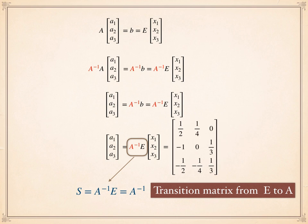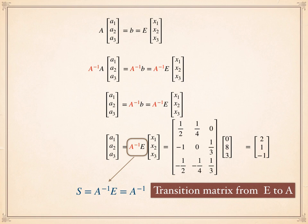To find vector a, I multiply the inverse matrix of A by the vector x, which is the coordinate vector of b with respect to the standard basis. The result (2, 1, -1) is the coordinate vector of vector b with respect to the new basis A, formed by u, v, and w.